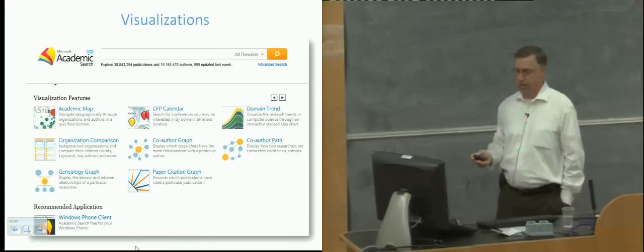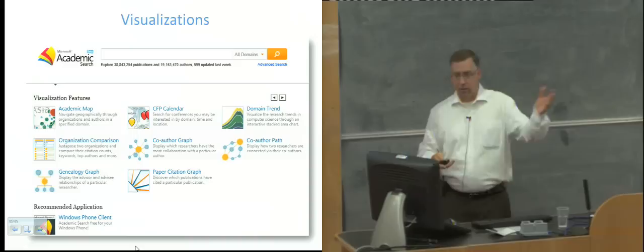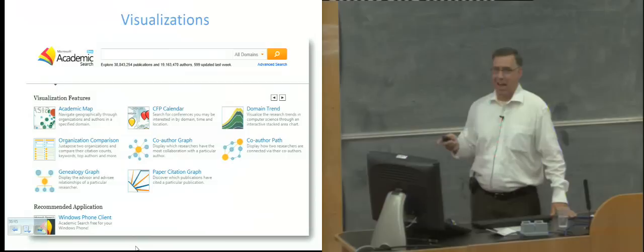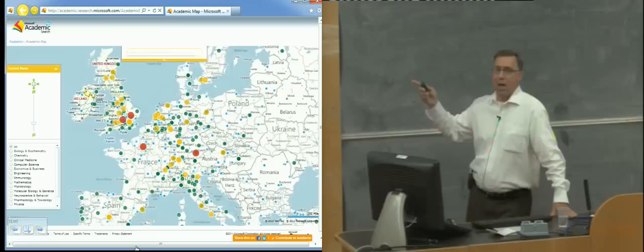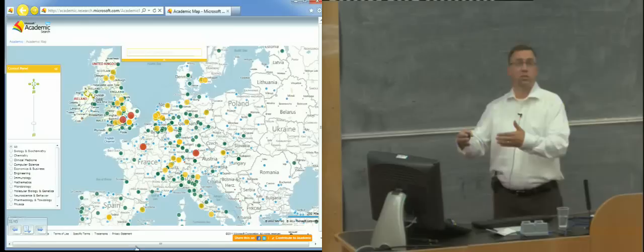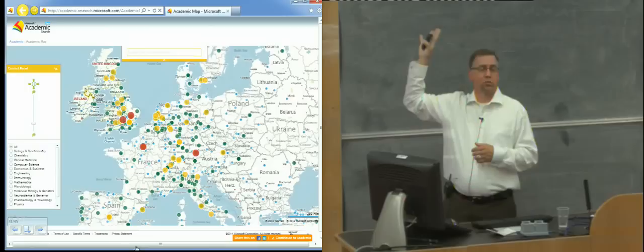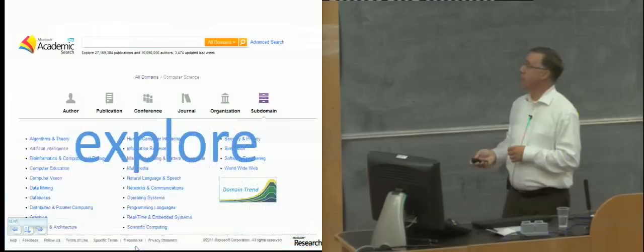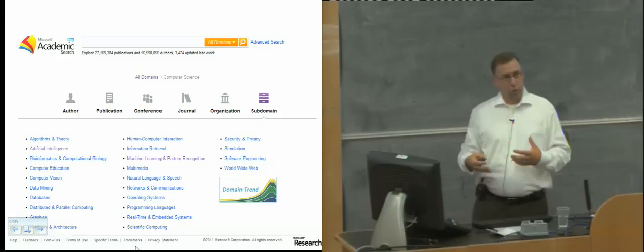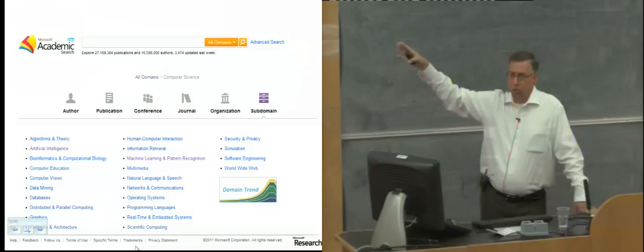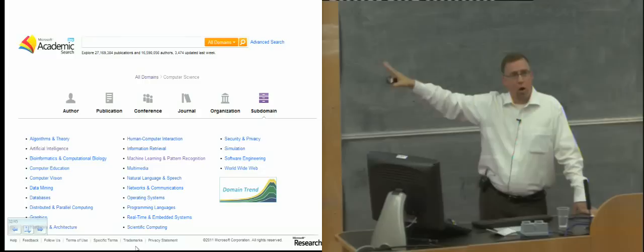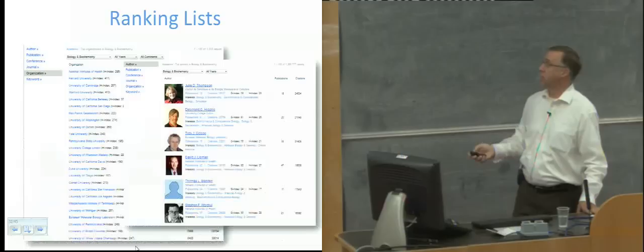We provide a number of different visualizations — play around with the site, it's freely available at academic.research.microsoft.com. The academic map allows you to zoom in geographically on institutions, filter by domain such as chemistry, with dot sizes giving a relative indication of publication count. We also invite people not just to search by keyword but to explore the data — drilling down into a domain hierarchy to see top authors, top journals, top conferences, and top organizations, generating rank lists for each domain.